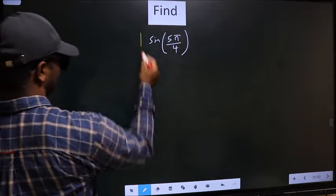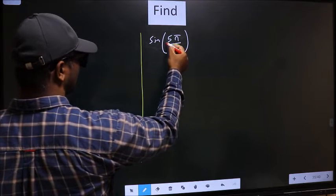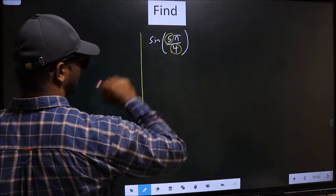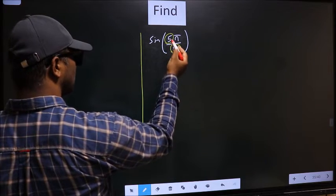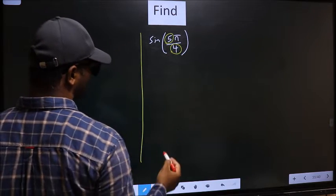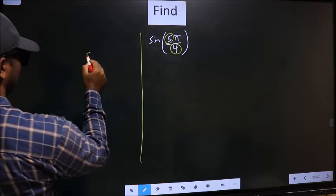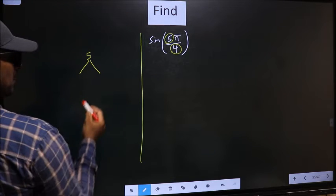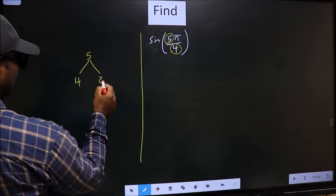See, in the denominator, we have 4. In the numerator, we have 5. Now you should look, 5 is close to which multiple of 4. What I mean is 5 and here you write multiples of 4. That is 4 and 8.